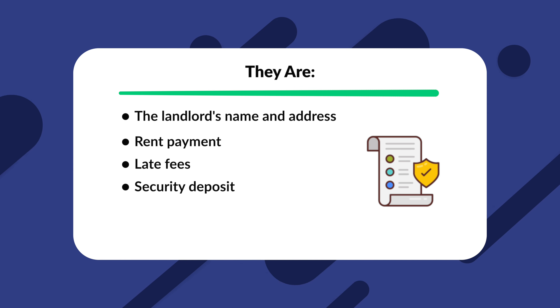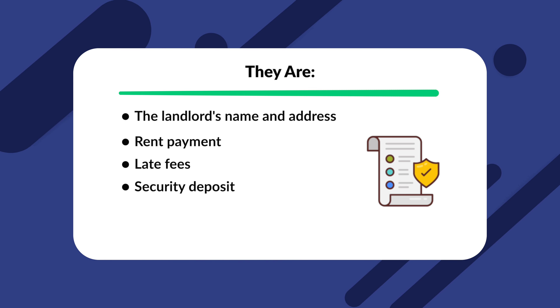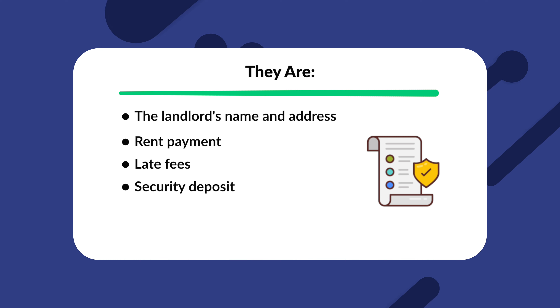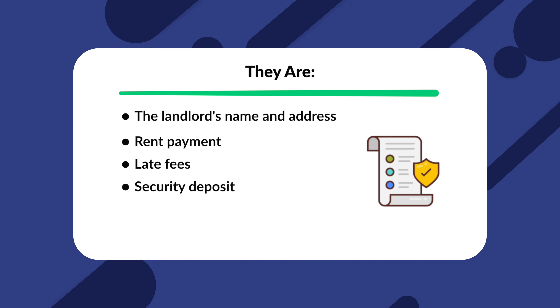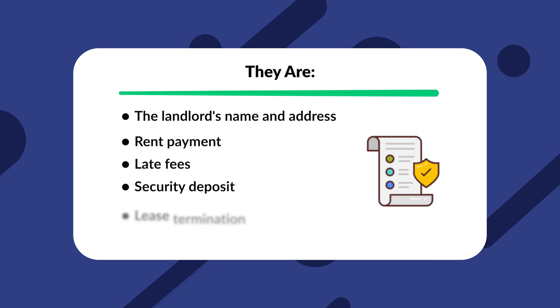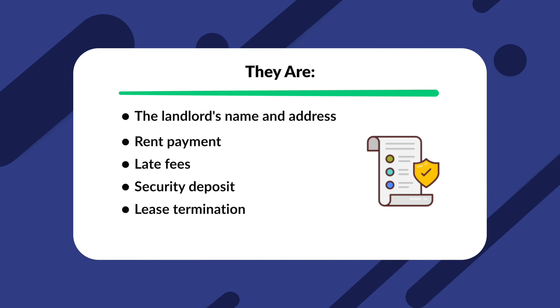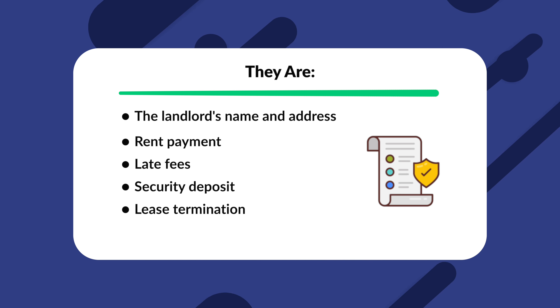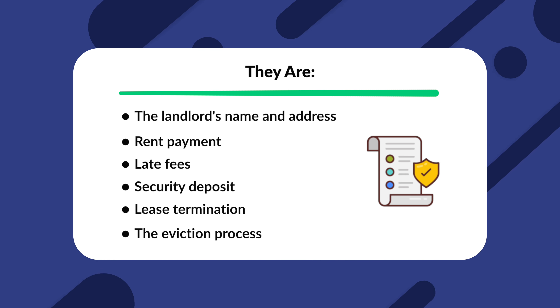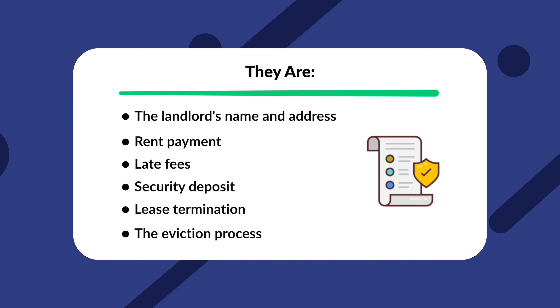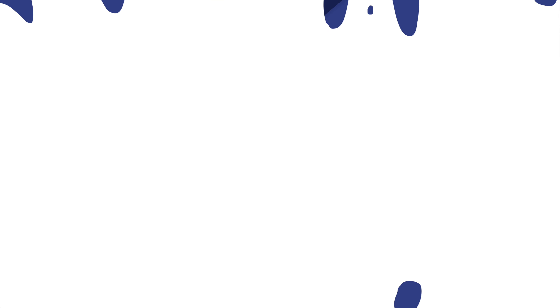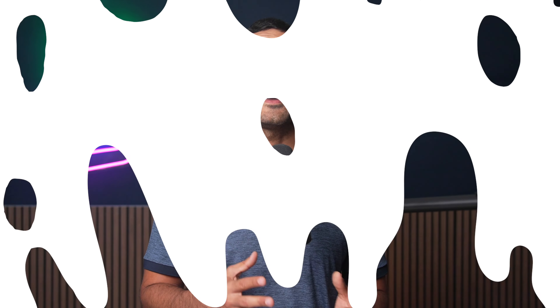Security Deposit: you must also include details about security deposits. Maximum amounts apply in Arkansas, and landlords may not charge more than two months' rent. Lease Termination: the tenant should also have information about the termination of the contract. The eviction process: Arkansas lease agreements must also include the terms for eviction. Mandatory Disclosure: if an Arkansas landlord fails to make the federal or state mandated declarations to a tenant, they may face legal action or hefty fines.